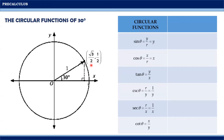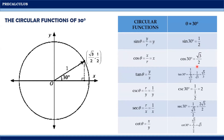With x equal to √3/2 and y equal to 1/2, the circular functions of 30 degrees are: sine 30° = 1/2; cosine 30° = √3/2; tangent 30° = (1/2)/(√3/2) = 1/√3 = √3/3 by rationalization; cosecant 30° = 1/(1/2) = 2; secant 30° = 1/(√3/2) = 2√3/3 by rationalization; and cotangent 30° = (√3/2)/(1/2) = √3.